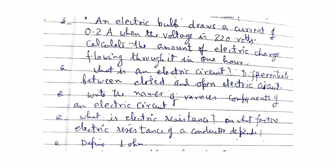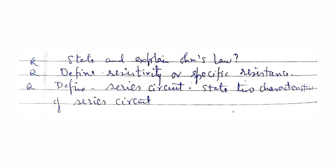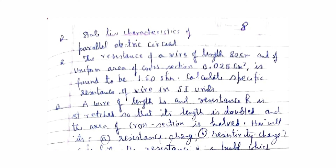What is an electric circuit? Differentiate between closed and open electric circuits. Write the names of the various components of an electric circuit. What is an electric resistor and resistance, and on what factors does the electric resistance of a conductor depend? Define one ohm. State and explain Ohm's law. Define resistivity or specific resistance. Define series circuit and state its two characteristics, and state the two characteristics of a parallel electric circuit. The resistance of a wire of length 80 cm and uniform cross-section 0.025 cm² is 1.50 ohm — calculate the specific resistance in SI units. A wire of length L and resistance R is stretched so that its length is doubled and area of cross-section is halved — how will the resistance and resistivity change?